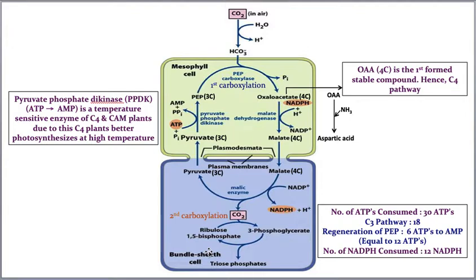To avoid photorespiration, Rubisco is relocated from the mesophyll cells into the bundle sheath cells. Since bundle sheath cells in Kranz anatomy are impermeable to gases, oxygen cannot reach Rubisco there. Instead, CO2 is delivered in the form of malate, which releases it inside the bundle sheath.